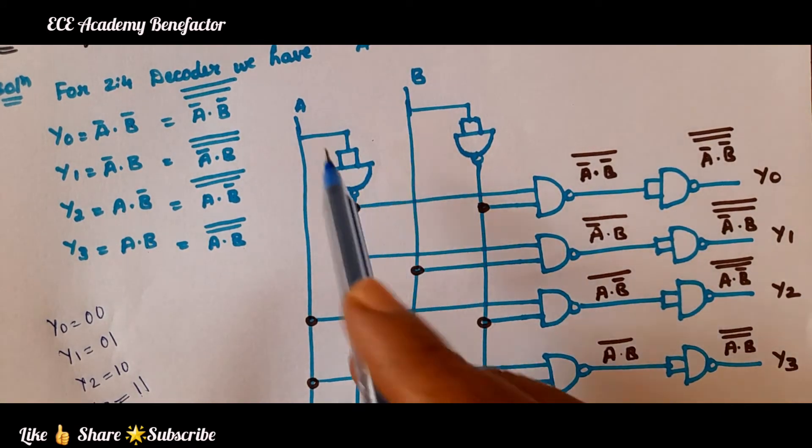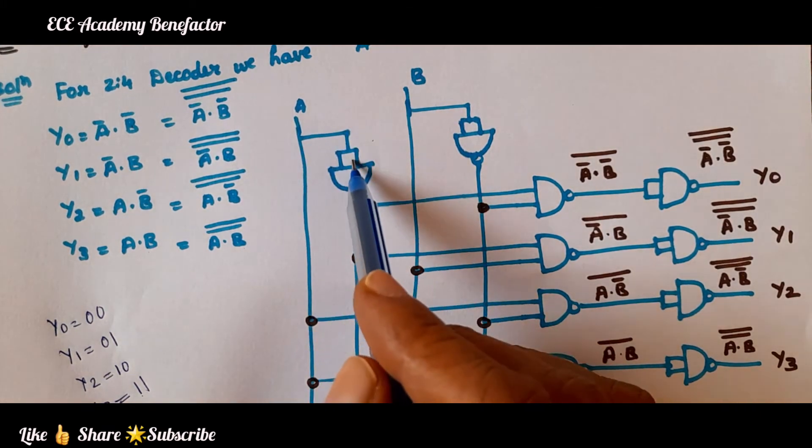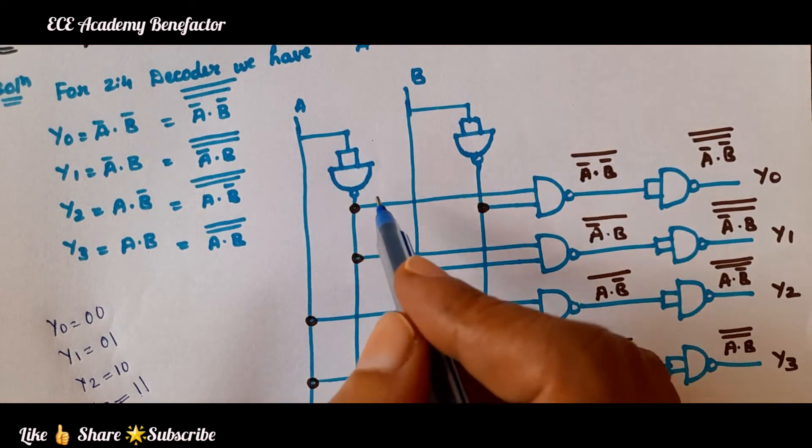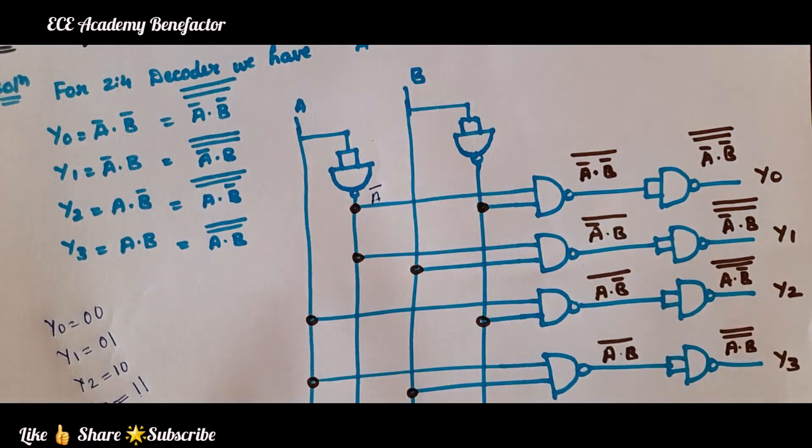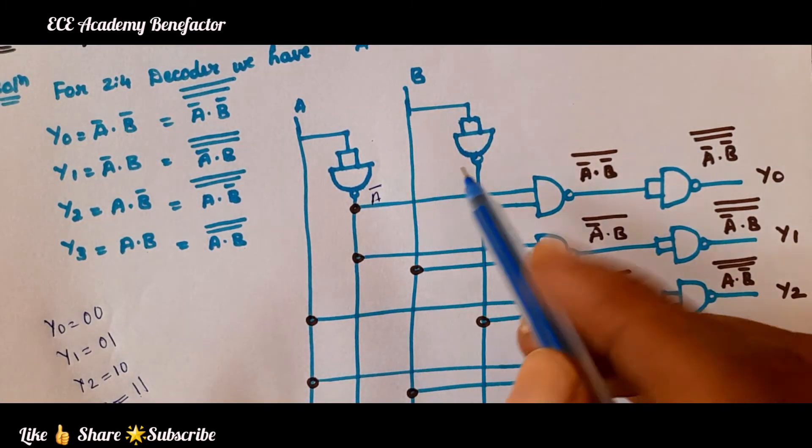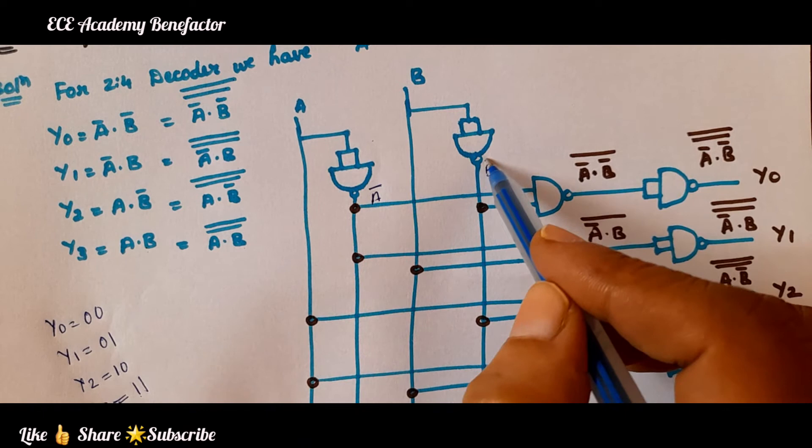To get A̅, how do we connect? We connect it through a NAND gate. Here we will be getting A̅. This is B, here it is B̅.